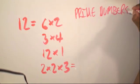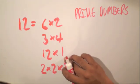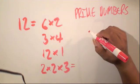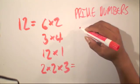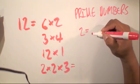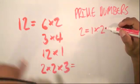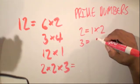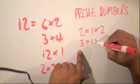By definition, prime numbers are whole numbers that are larger than 1. That's why we don't include the number 1 — they are whole numbers larger than 1, which have only 2 factors: 1 and itself. So 2 is a prime number because it contains only 2 factors, which are 1 times itself, which is 2. And 3 is also a prime number because it contains just 2 factors, which are 1 times itself, which is 3.